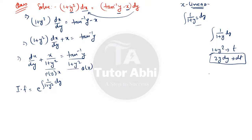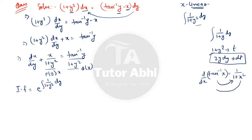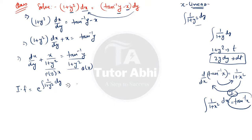To integrate 1/(1 + y²), we use the formula: the differentiation of tan⁻¹x is 1/(1 + x²), which means the integral of 1/(1 + x²) is tan⁻¹x. Using this formula, the integrating factor becomes e^(tan⁻¹y).